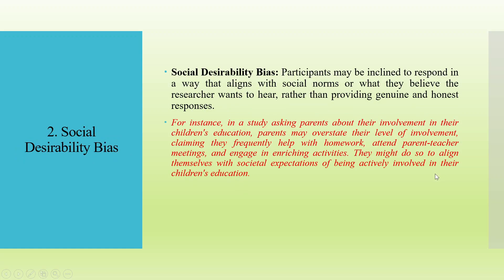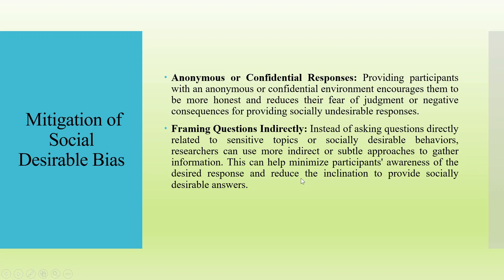The second reason is social desirability bias. Participants may be inclined to respond in a way that aligns with social norms or what they believe the researcher wants to hear, rather than providing genuine and honest responses. For instance, in a study asking parents about their involvement in their children's education, parents may overstate their level of involvement, claiming they frequently help with homework, attend parent-teacher meetings, and engage in enriching activities to align with social expectations. To mitigate this, providing an anonymous or confidential environment encourages participants to be more honest and reduces their fear of judgment.